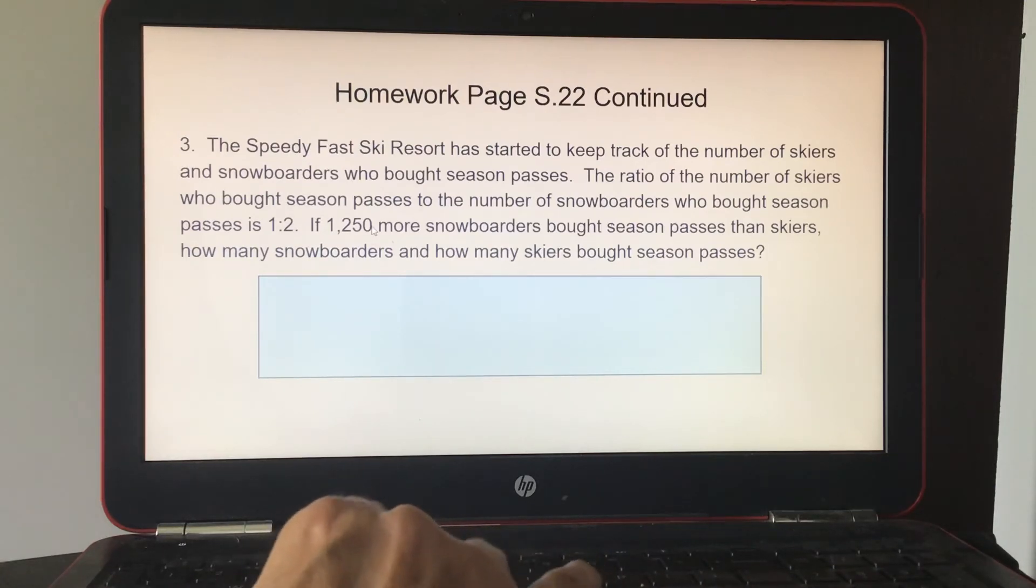And if 1,250 more snowboarders bought season passes, you could put 1,250 in one box, 1,250 in the other box, and then put 1,250 for the skiers, okay? Now if they ask you the total number of snowboarders, then you would have to add the two boxes together of 1,250 and 1,250 to get your total.